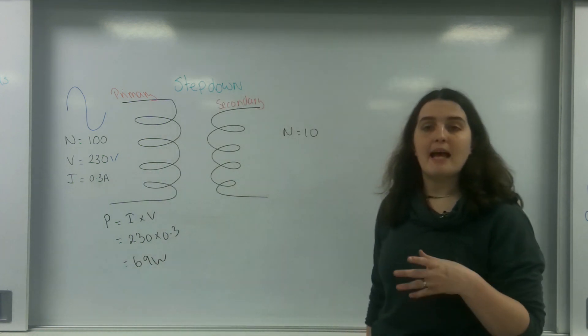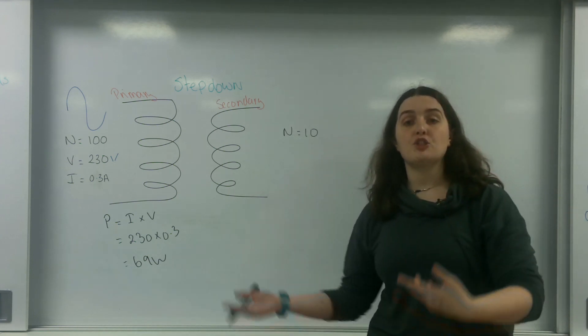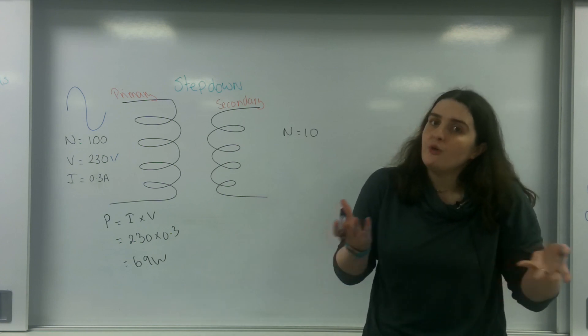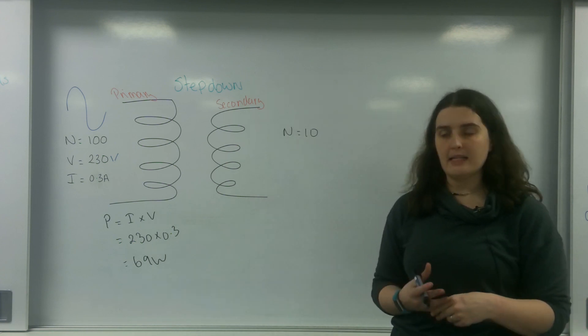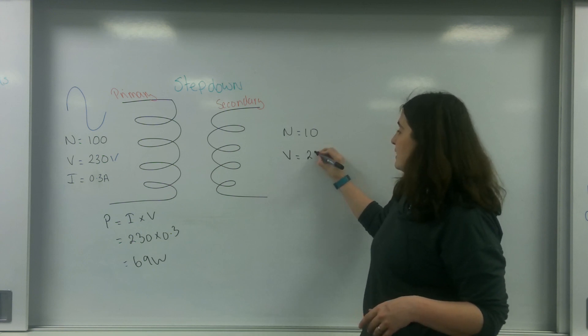Now on this side, this is a step-down transformer, and because my number of turns has gone down, the EMF that would be induced would also go down by the same factor. So my voltage on this side is going to be 23 volts.